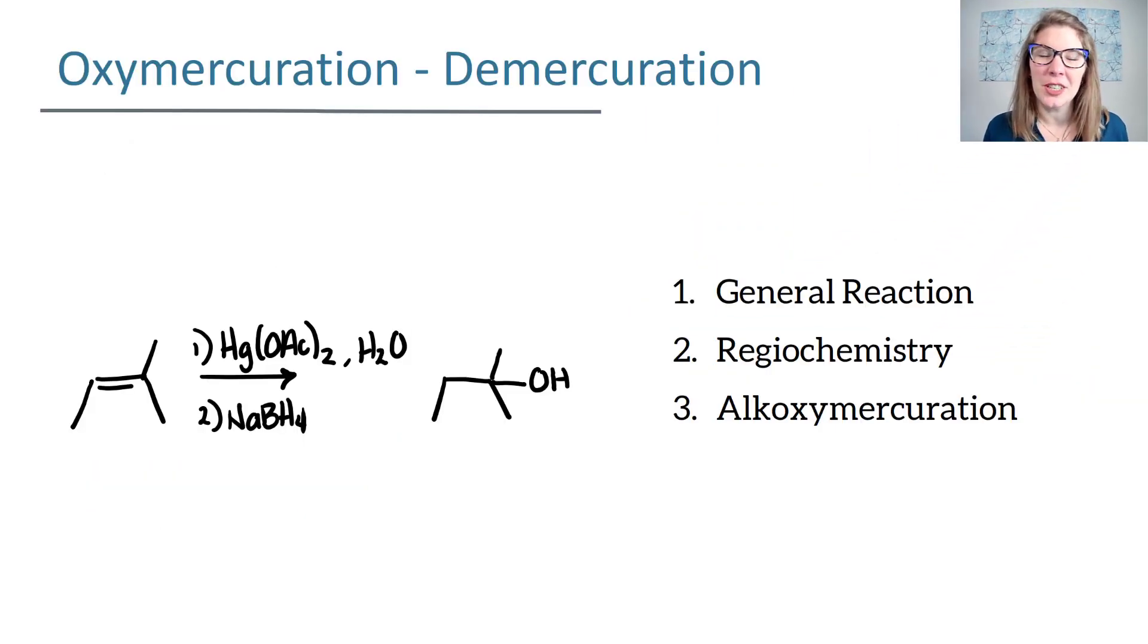In oxymercuration-demercuration, you have this Hg(OAc)2 molecule, which if we draw it out, looks like this. The OAc is an acetate group, so this is actually an abbreviated format. And then you have your nucleophile, which in this case is water.